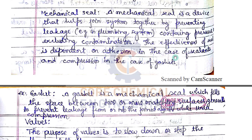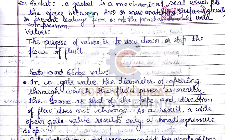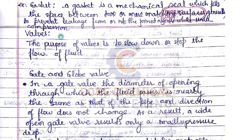A stuffing box is an assembly used to house a gland seal, preventing leakage of fluid such as water or steam between sliding and turning parts. A mechanical seal joins system components together by preventing leakage, containing pressure, and excluding contamination. The effectiveness of a seal depends on the addition of sealant or, in the case of gaskets, the compression applied. A gasket is a mechanical seal that fills the space between two matching surfaces to prevent leakage while under compression.